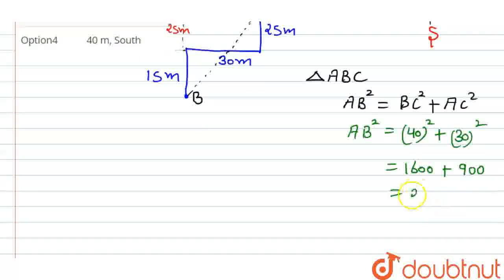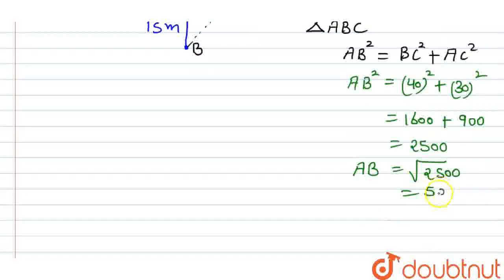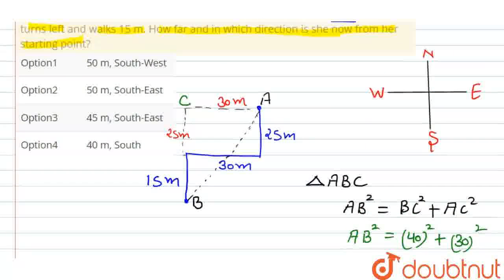So, 2500. So, this is AB. AB is square root of 2500. That means, how much will it be? Equal to 50 meter. So, distance we will find out, that is 50 meter.